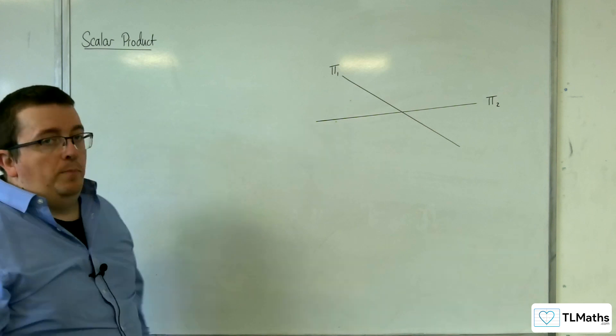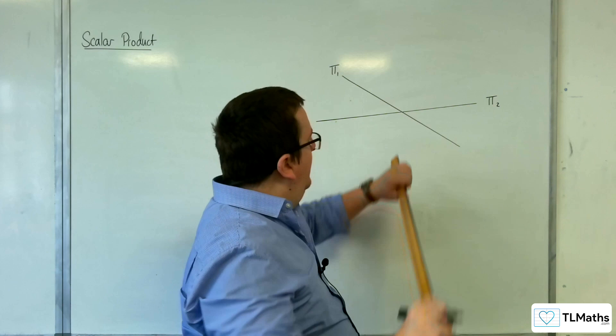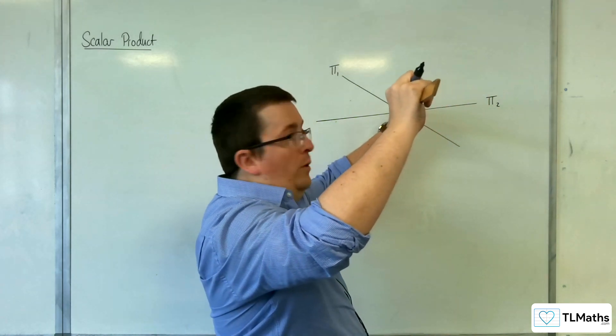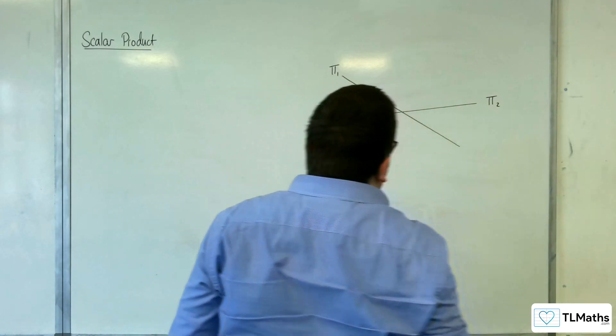So for each of those two planes, what you can imagine is that there is a line of points that's going down through the board. And we're kind of seeing them side on.